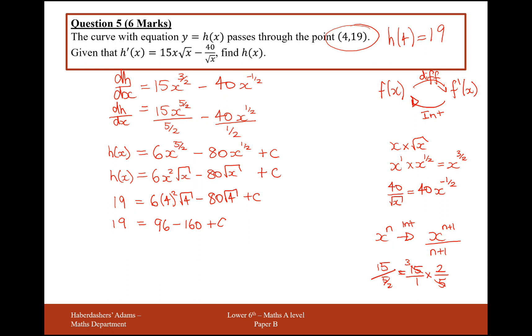And then simplifying this, taking everything over to the other side, and you get C equals minus 13. So therefore, our final answer is going to be h of x equals 6x squared root x minus 80 root x. So everything coming down from here, plus C, but C was minus 13, so we need to take away 13. Okay, great. That's the 6 marks for that question.